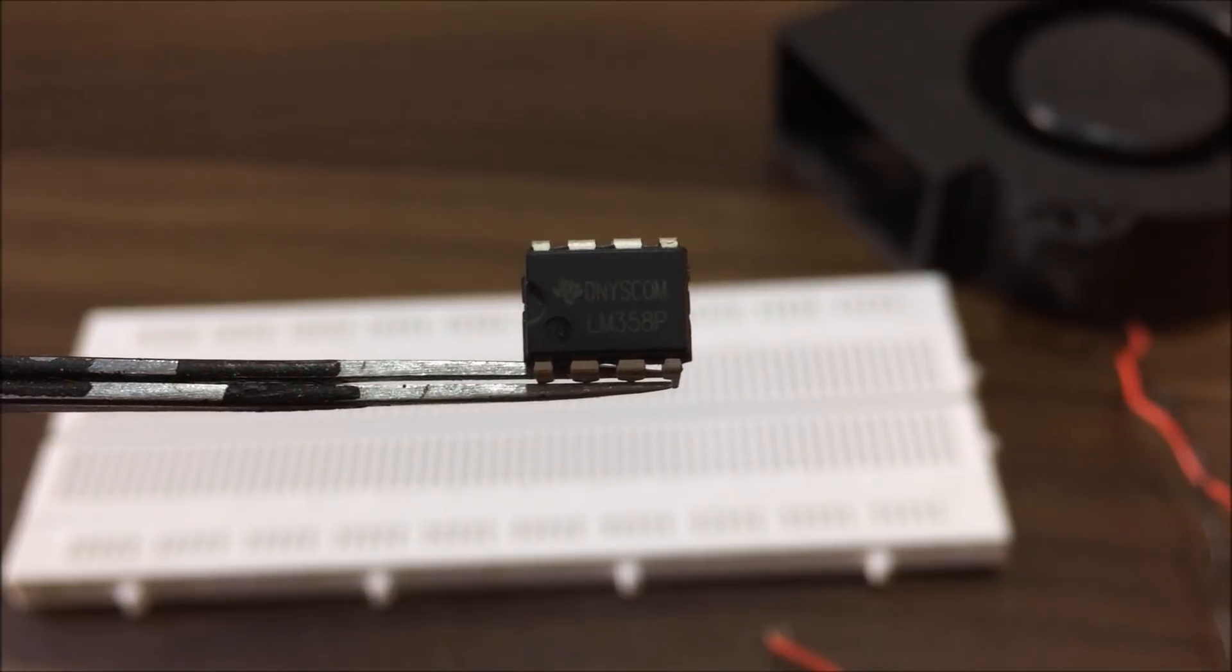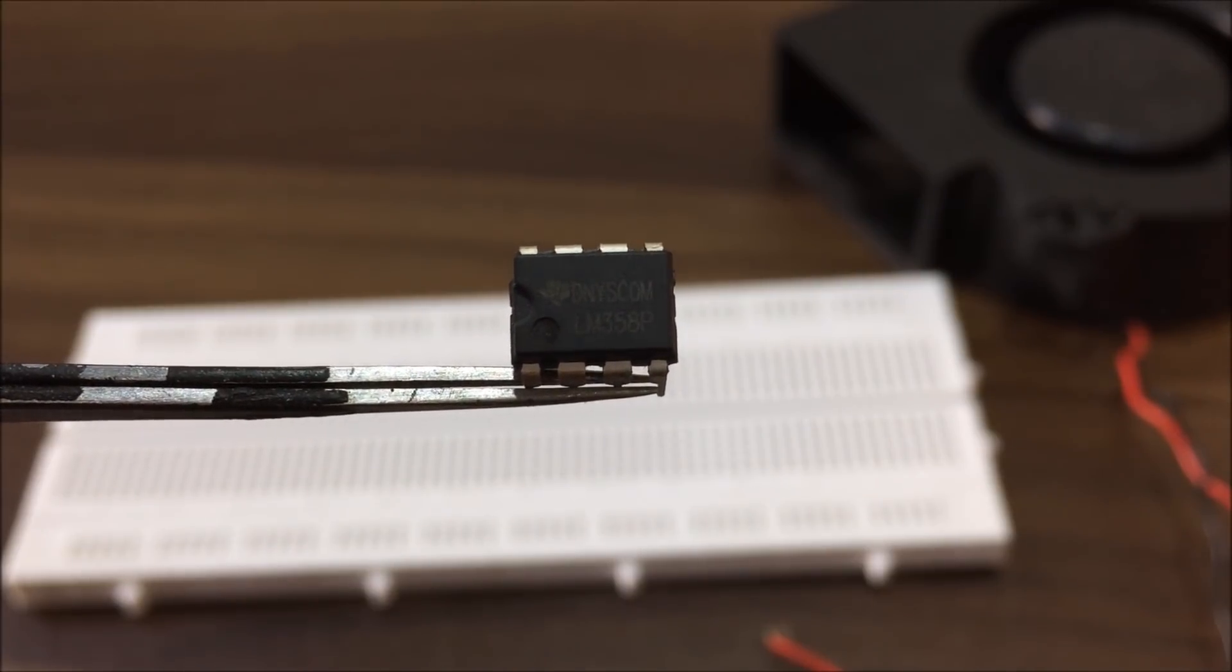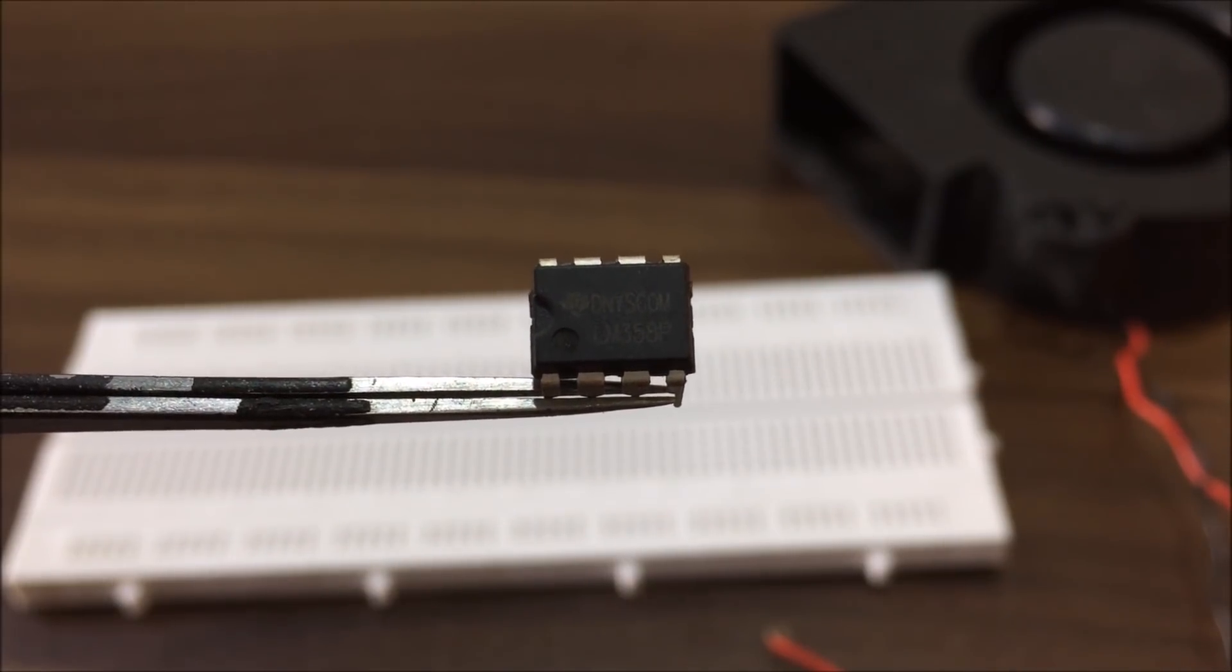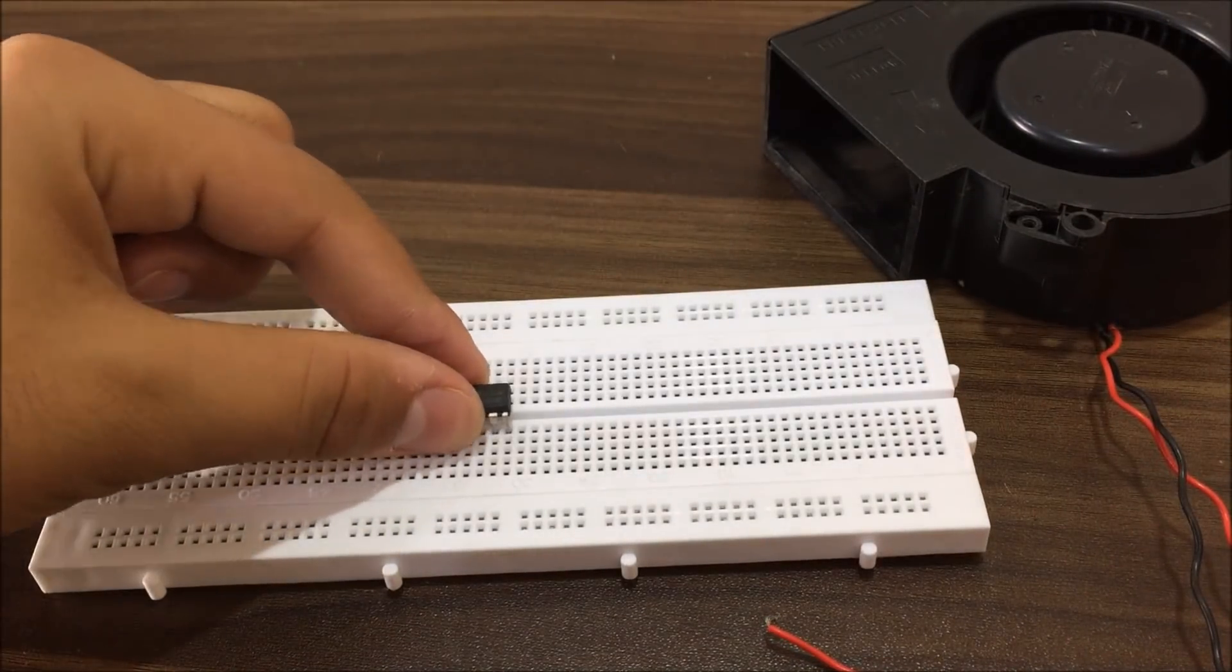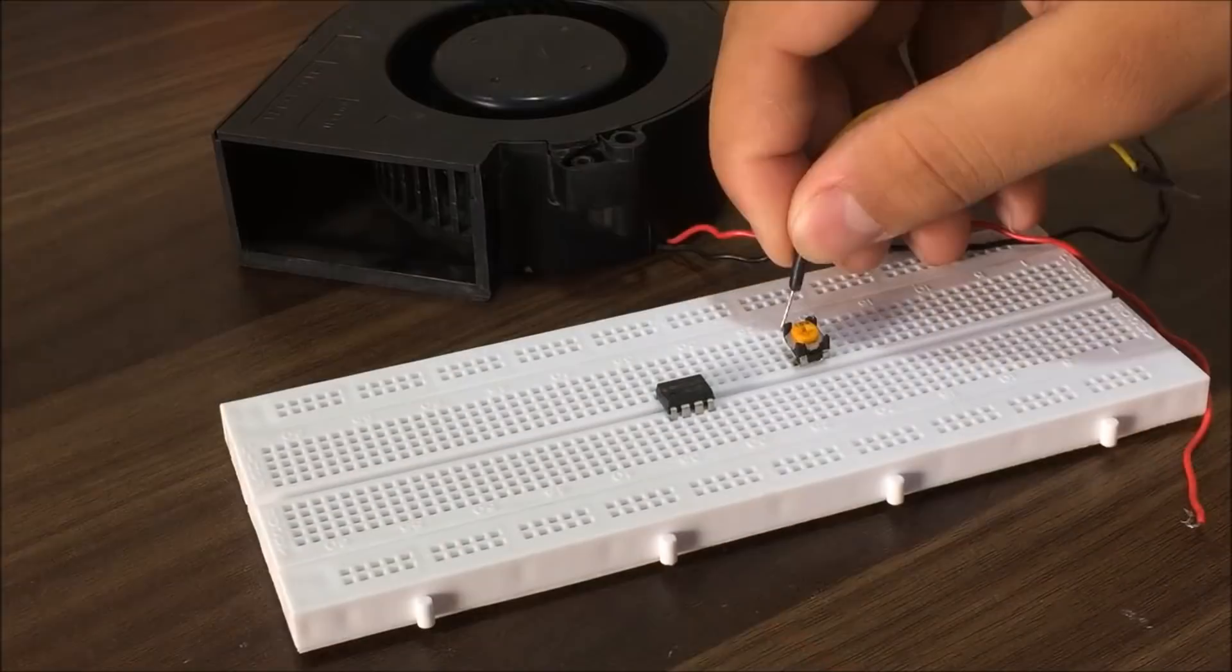Now, in order to control the fan, you will need an op-amp. I am going to use this LM358, which is a dual op-amp IC, through which I can create a comparator, whose reference voltage is controlled by this potentiometer.